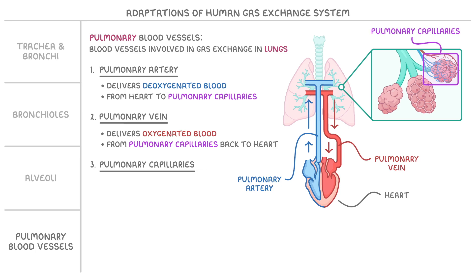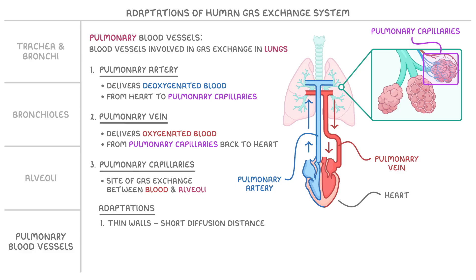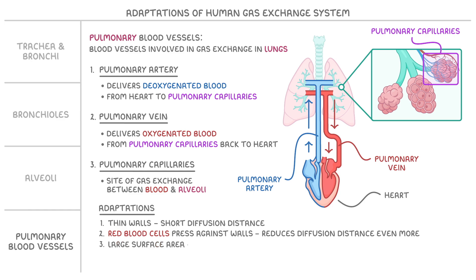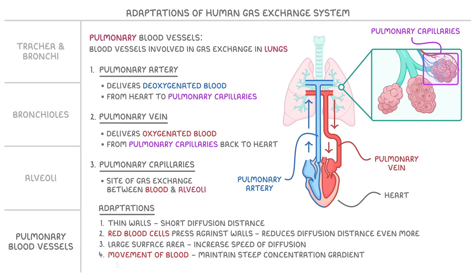The pulmonary capillaries are the vessels that surround the alveoli and are the site of gas exchange between the blood and the alveoli, with several adaptations to make this exchange as efficient as possible. First, like the alveoli, they have really thin walls — just one endothelial cell thick — so there's a very short diffusion distance for gases to cross. Second, red blood cells press against these walls, which reduces the diffusion distance even further. Third, the large surface area of the capillaries increases the speed of diffusion, while the movement of blood maintains a steep diffusion gradient. Finally, blood moves relatively slowly through these capillaries, allowing more time for diffusion to occur.